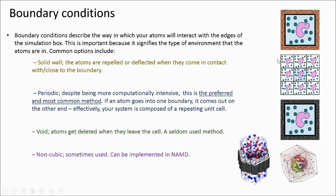Periodic, by far the most common method as it most closely resembles real life. Periodic boundary conditions mean that if an atom goes into one boundary, it comes out of the opposing boundary. We can think of this as an ever repeating unit cell of our simulation space.